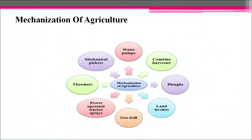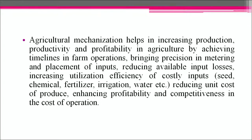Mechanization of agriculture includes plows, land levelers, box drills, power-operated tractors, sprayers, threshers, mechanical pickers, water pumps and combined harvesters. Agricultural mechanization helps in increasing production, productivity and profitability by achieving timeliness in farm operations, bringing precision in metering and placement of inputs, reducing input losses, increasing utilization efficiency of costly inputs such as seed, chemicals, fertilizer and irrigation water, reducing unit cost of produce, and enhancing profitability and competitiveness.